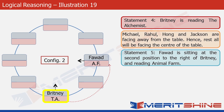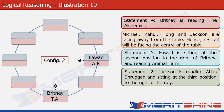Statement two says that Jackson is reading Atlas Shrugged and is sitting at the third position to the right of Brittany. So we place Jackson at that cell, write AS for Atlas Shrugged, and since we know Jackson is facing away from the table, we put an outward arrow at his position. This completes configuration two.